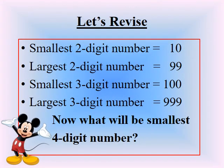Children, before starting, let's revise with me. The smallest two digit number is 10, the largest two digit number is 99, the smallest three digit number is 100, and the largest three digit number is 999.